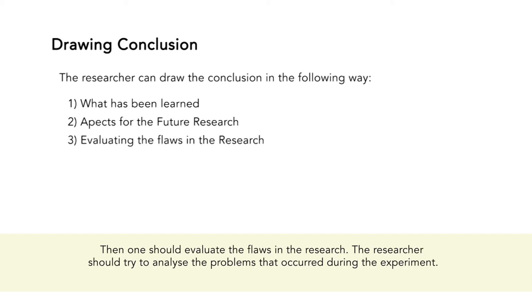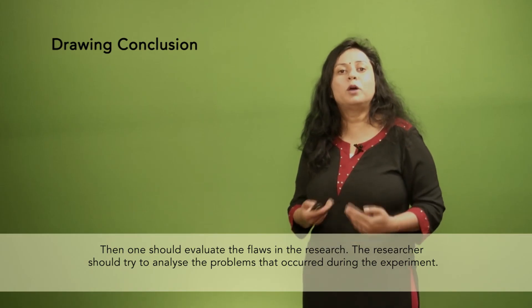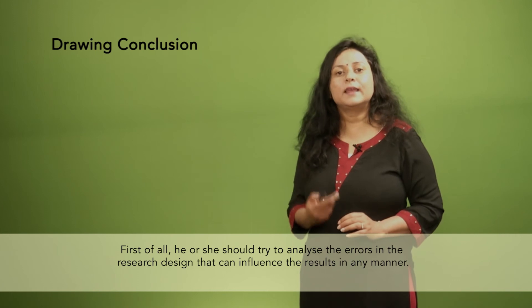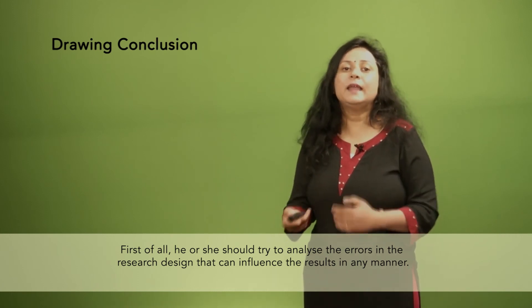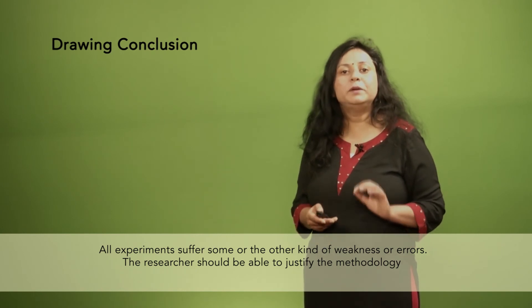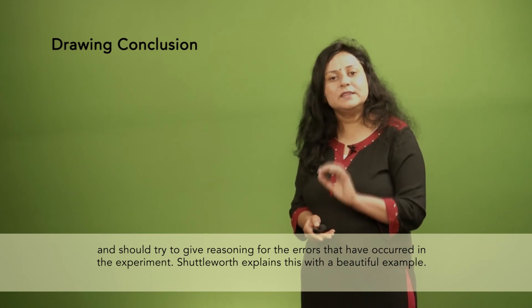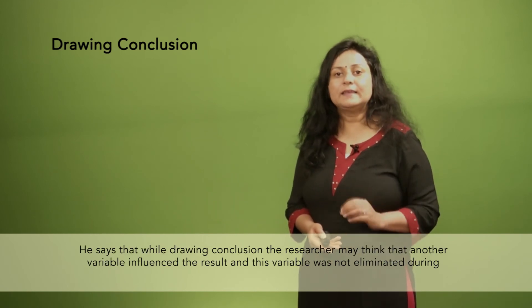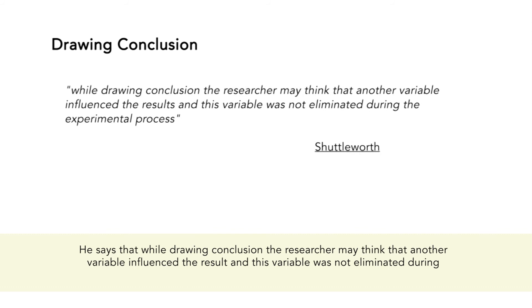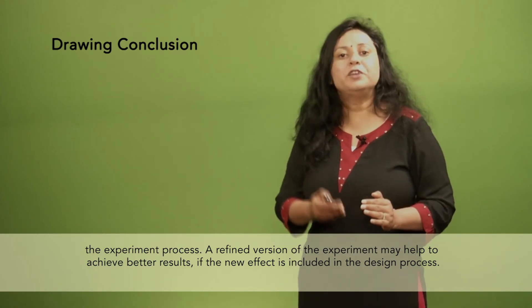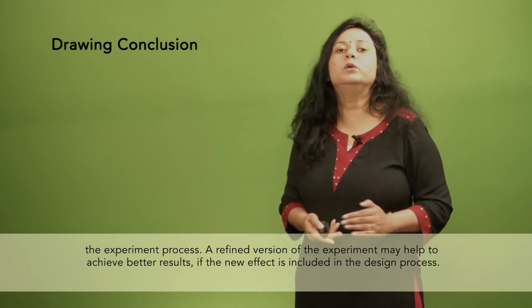Third, one should evaluate the flaws in the research. The researcher should try to analyse the problems that occurred during the experiment — first, analysing the errors in the research design that can influence the results. All experiments suffer some kind of weakness or error. The researcher should be able to justify the methodology and should try to give reasoning for any errors or results that occurred in the experiment. Shuttleworth explains this with a beautiful example: while drawing a conclusion, the researcher may think that another variable influenced the results and this variable was not eliminated during the experiment. A refined version of the experiment may help to achieve better results if the new effect is included in the design process.